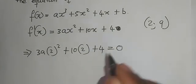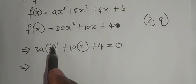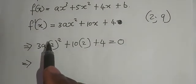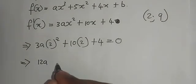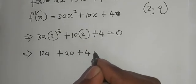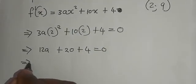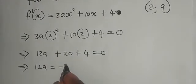So which means we are saying 3a(2)² + 10(2) + 4 equals 0, which means this becomes 2 squared, that's 4 plus 3, which is 12a + 20 + 4 = 0, which means 12a = -24.